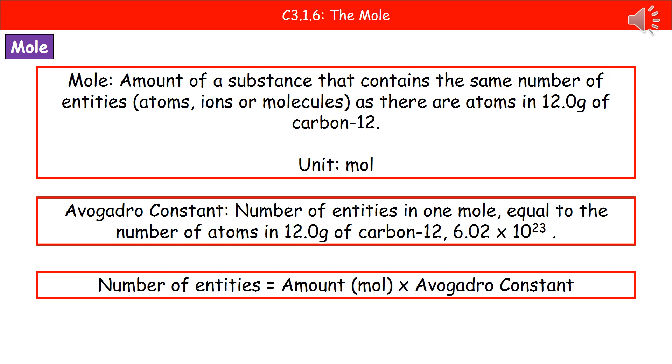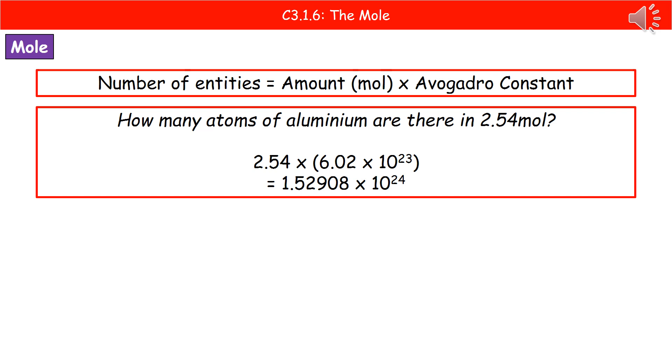So if you got a question that asked you how many entities there were in 6 moles of a particular chemical, then all you need to do is 6, which is obviously your amount in moles, times by the Avogadro constant 6.02 times 10 to the 23, and that will give us our answer. So this is just to give you an idea of the kind of question we may see.